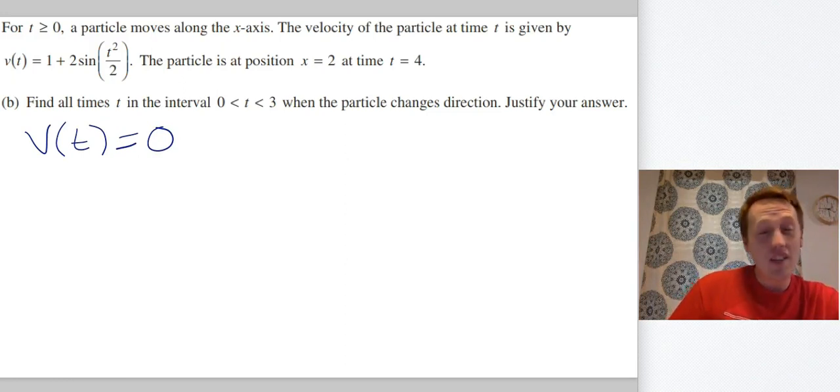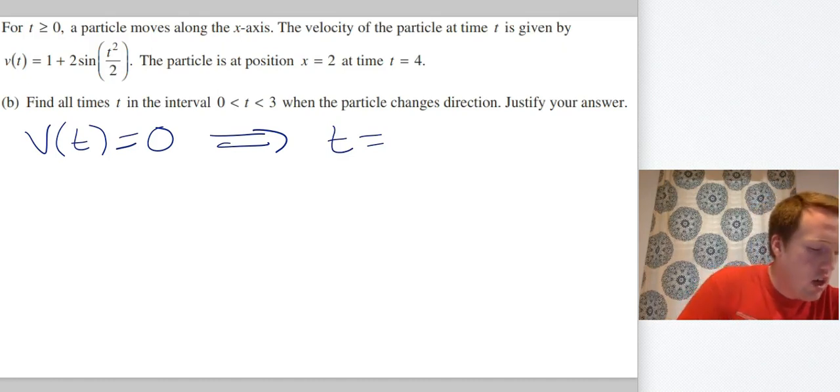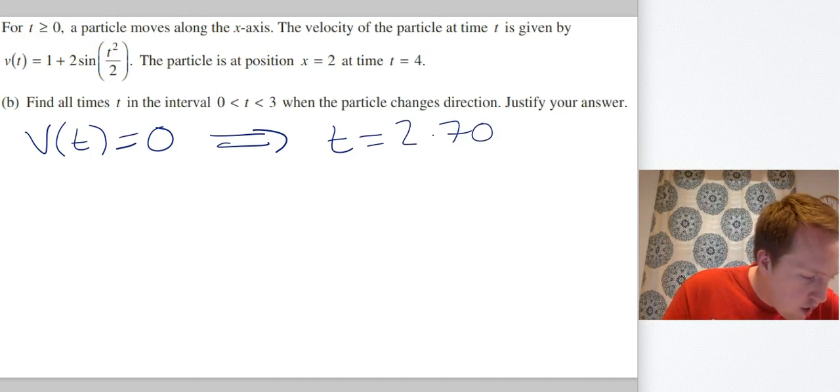It might change direction there. Again, this is the graphing calculator section, so I'm going to graph this and I'm going to see specifically where it changes direction. That happens when t = 2.707.